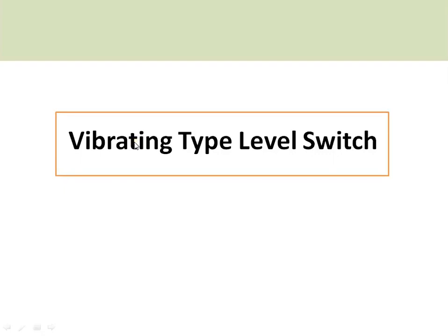In this video I will discuss the vibrating type level switch. This type of level switch is used for point level control applications in a tank — for example, if you want to sense the overflow of a tank, or if you want to prevent the dry run of a pump connected to the tank. These level switches are commonly used for on-off applications.